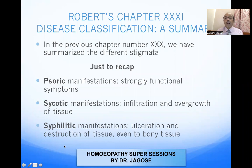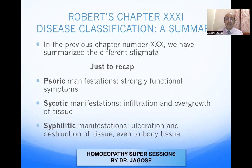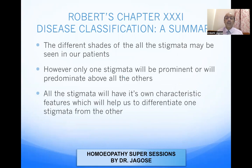In the previous Chapter 30, we summarized the different stigmatas. To recap: Sycotic manifestations are strongly functional symptoms — infiltrations, overgrowth, hypertrophy, hyperplasia. Syphilitic manifestations include ulceration and destruction of tissue, even of the bony tissue — destruction, regeneration, atrophy, and ulceration. These different shades of all the stigmata may be seen either singly or in different combinations in our patients.